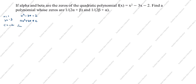Next step: sum of zeros. Alpha plus beta is equal to minus b divided by a. b is minus 3, so minus of minus 3 divided by 1. Therefore alpha plus beta equals 3.